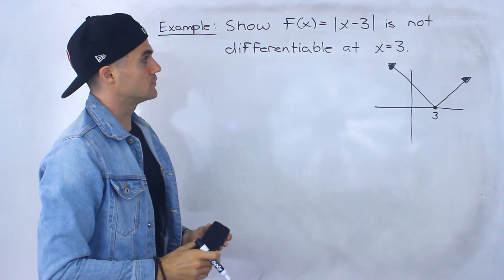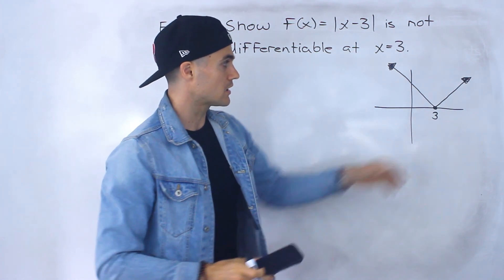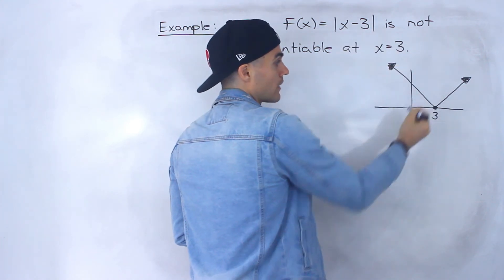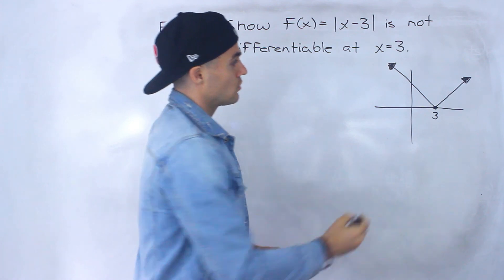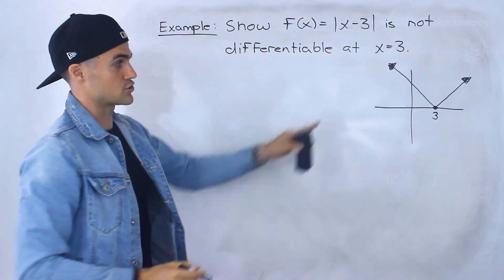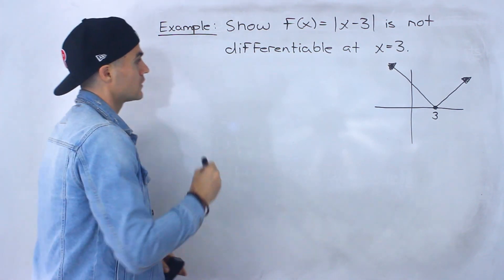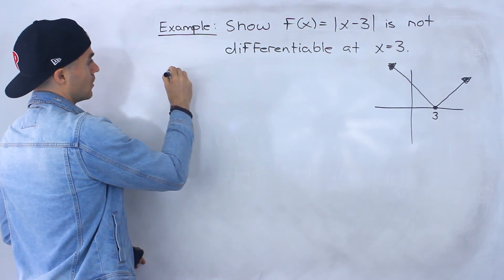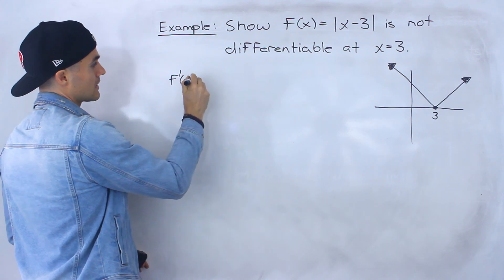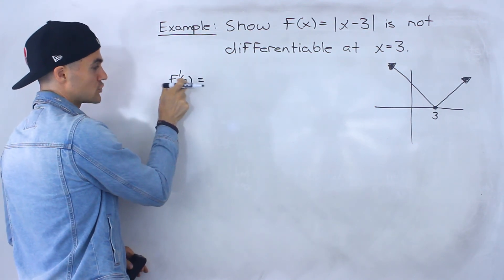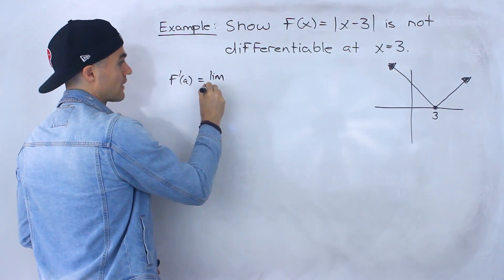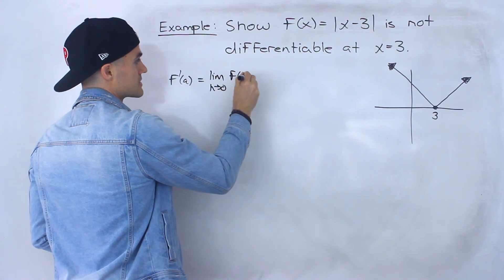What we have to show is at that x value of 3, which is a corner — notice if we plug in 3 for x we'll get y value 0 — we have to show that the derivative doesn't exist at that point, that the function is not differentiable at that point. As I mentioned in the overview video, to show that, we basically have to show that the derivative of the function at a certain x value a doesn't exist, meaning we have to show that this limit here doesn't exist.